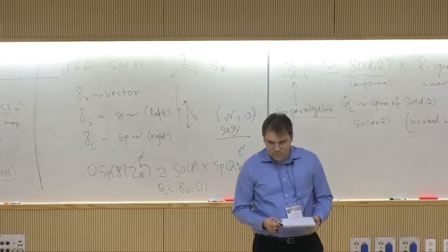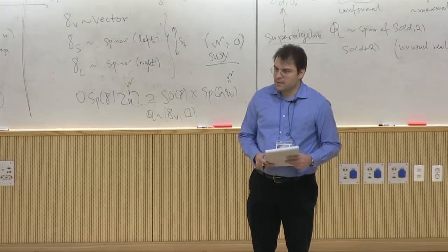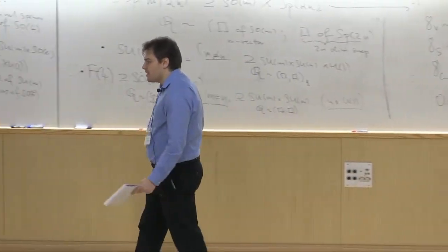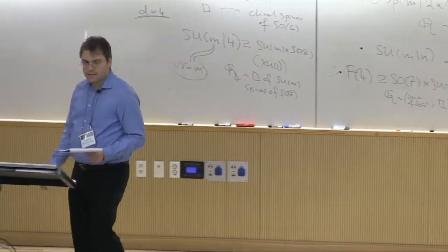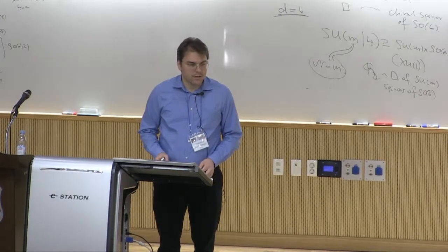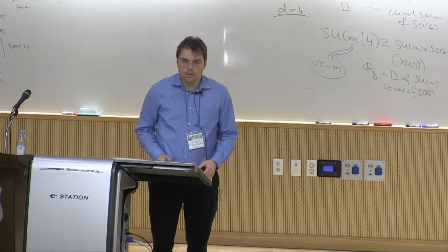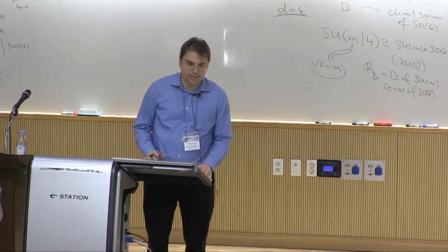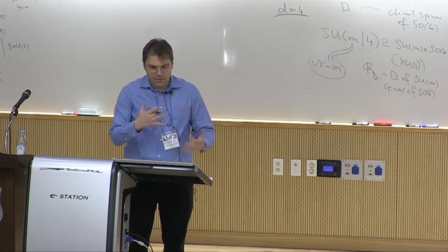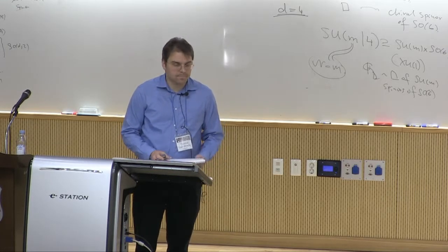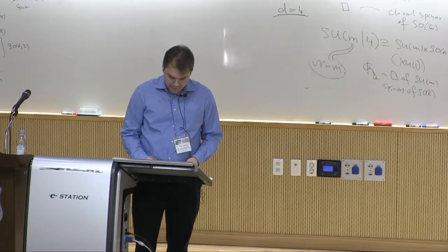The conclusion of our survey of superconformal algebras: due to exceptional automorphisms, there are superconformal algebras in three, four, and six dimensions for any N, and a unique superconformal algebra in five dimensions. Above six dimensions there is nothing. This is why the only superconformal field theories that have been discovered are in dimension six or less.